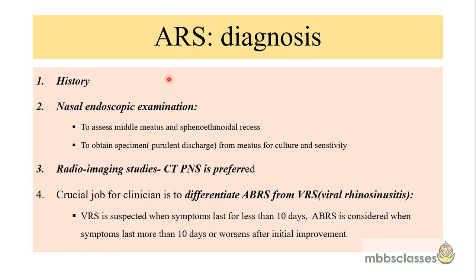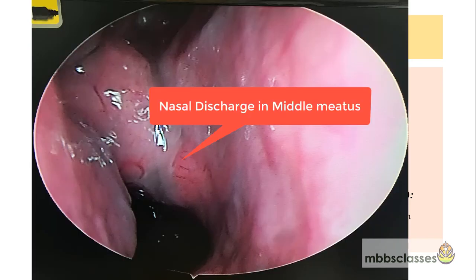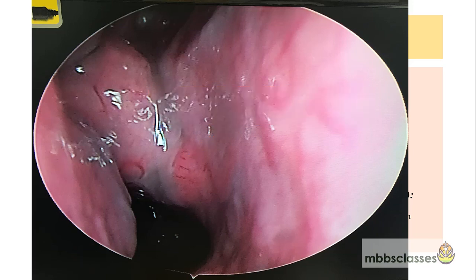To diagnose acute rhinosinusitis, the most important step is history taking — the type of symptoms, whether they are major or minor, and the duration. After history, the nasal endoscopic examination is done to assess the middle meatus and especially the sphenoethmoidal recess. In cases of severe disease with purulent discharge visible, it is taken for culture and sensitivity testing.